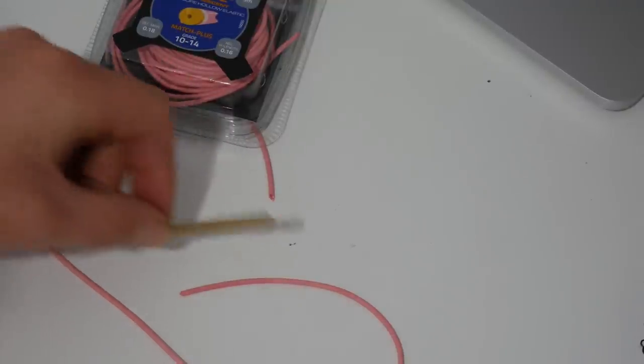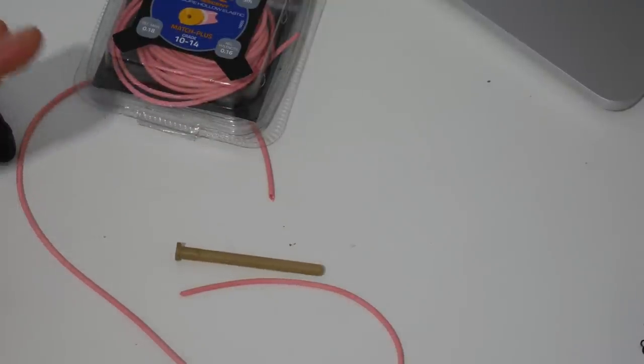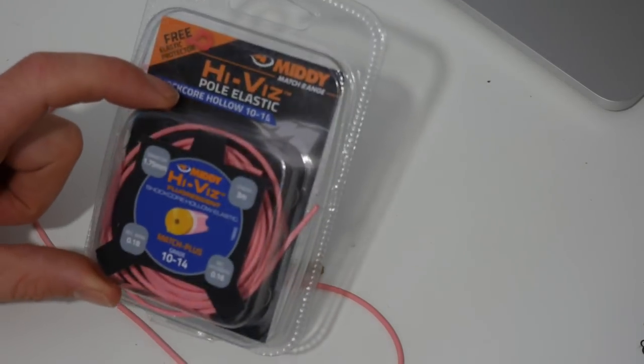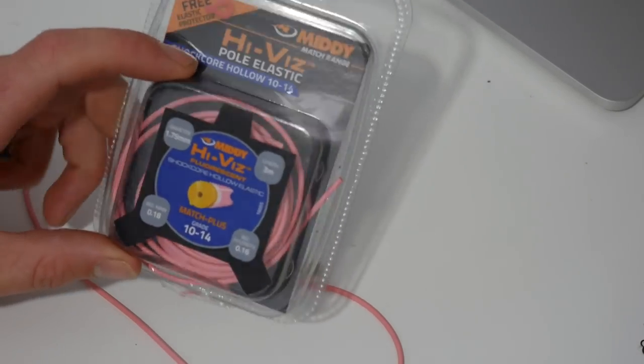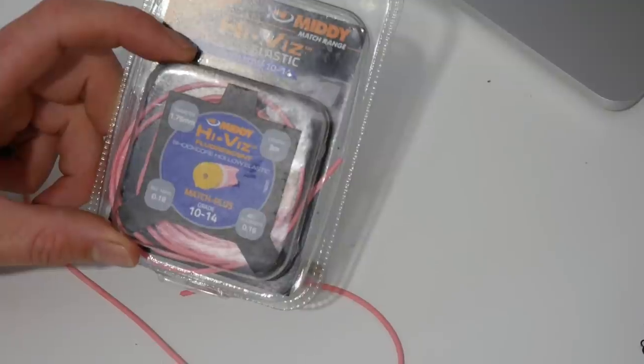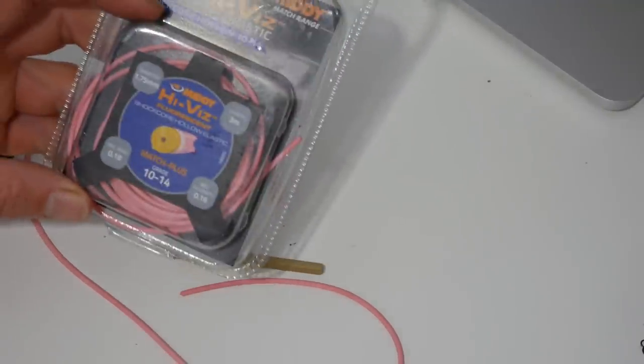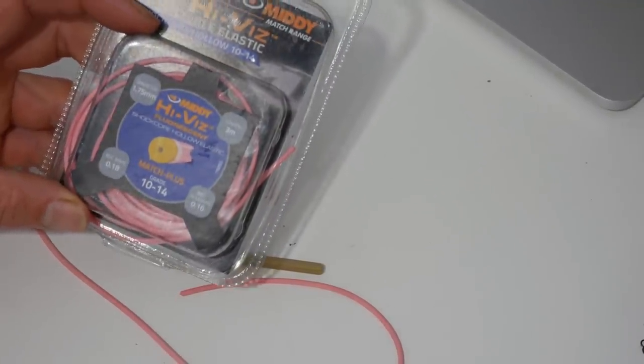Because I'm using that small feeder, I'm using the shorter stem, and for me that means I need to use quite a light elastic. Obviously I want loads of elastic to pull out when I'm playing a fish, get that feeder away from the hooked fish as far as possible.